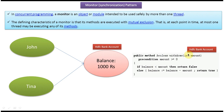Suppose they are passing 1500. Then it will fail — balance is 1000 and amount is 1500. The balance is less than 1500, so it won't allow the withdrawal and will return false. So this is the functionality of this withdraw method.